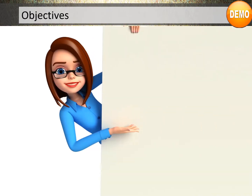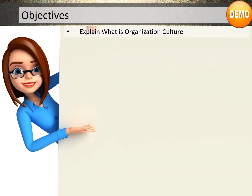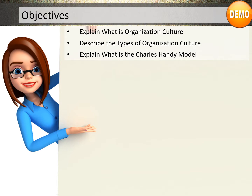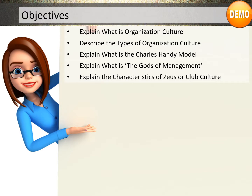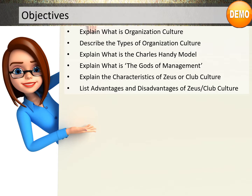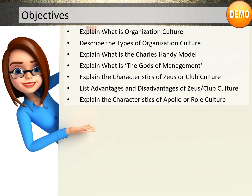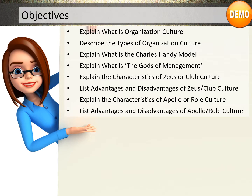Let's review the course objectives: explain what is organization culture; describe the types of organization culture; explain what is the Charles Handy model; explain what is the 'Gods of Management'; explain the characteristics of Zeus or club culture; and list the advantages and disadvantages of Zeus or club culture. We will also explain the characteristics of Apollo or role culture, and list the advantages and disadvantages of Apollo role culture.